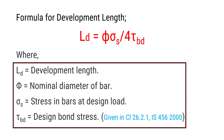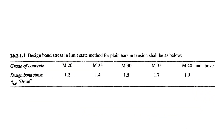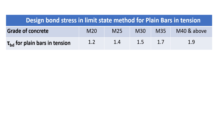Now, before we dive into examples, let's take a quick look at the design bond stress values. These vary based on the grade of concrete and whether the bars are in tension or compression. As you can see, this table shows us the values of Tau_BD for plain bars in tension with respect to different grades of concrete.